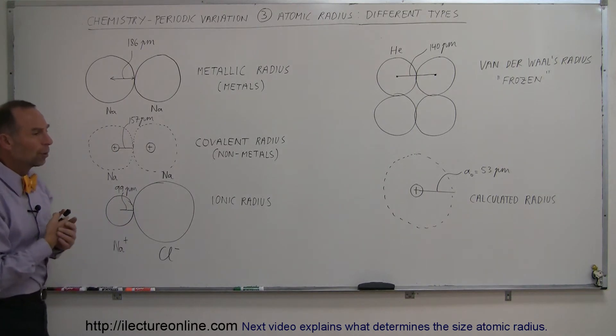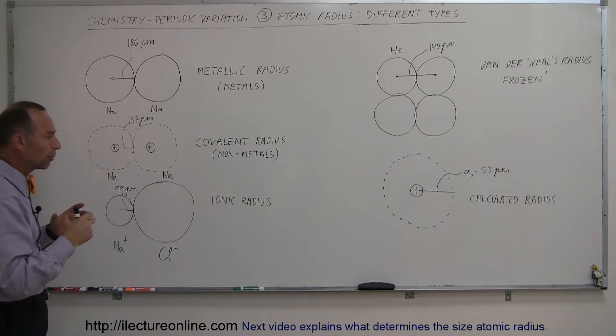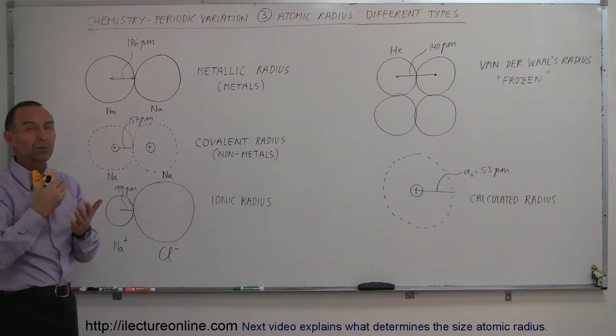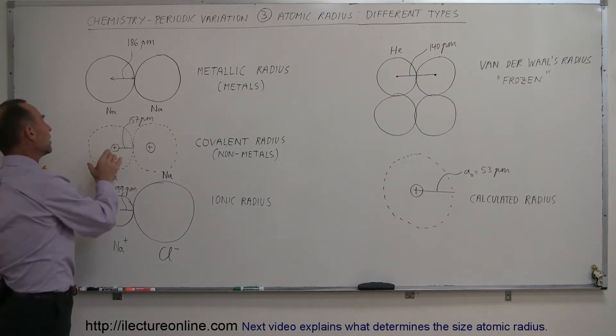Now, of course, sodium will bond a lot with other metals, and so they will form covalent bonds, and also they will form bonds with non-metals as well. And so in those cases, we have what we call covalent radius.